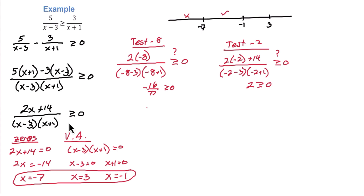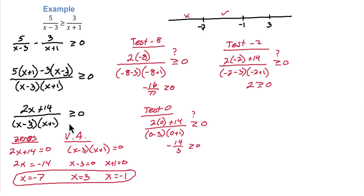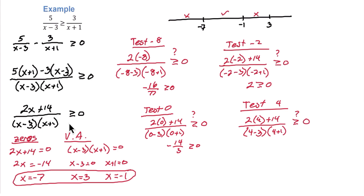In the third interval, we can choose zero and test it. We get 2 times 0 plus 14 divided by 0 minus 3 times 0 plus 1. Is it greater than or equal to zero? Here we get negative 14 thirds, which is not greater than or equal to zero — that's false. And finally, the last interval, let's test the number 4. 2 times 4 plus 14 divided by 4 minus 3 times 4 plus 1 — is that greater than or equal to zero? Here we get 22 fifths, which is greater than or equal to zero. So the solution set will be the intervals that are true.